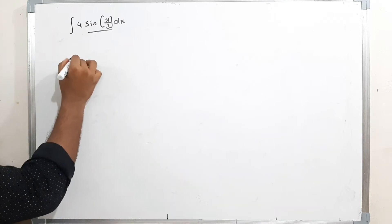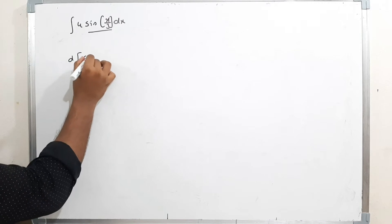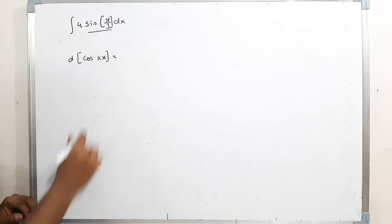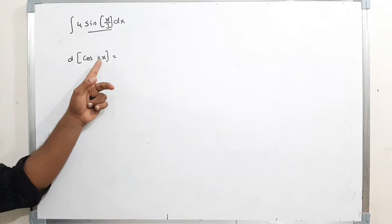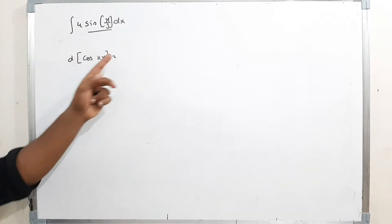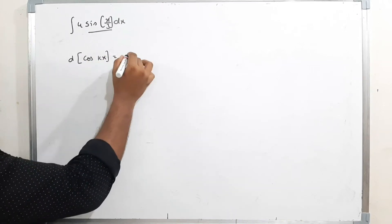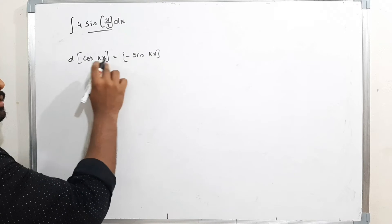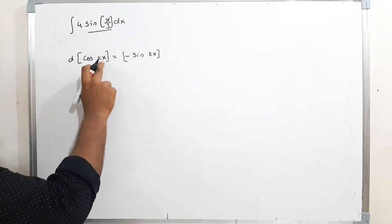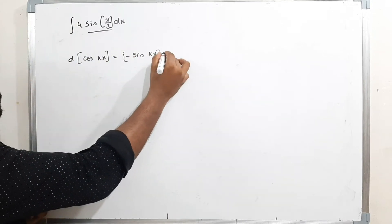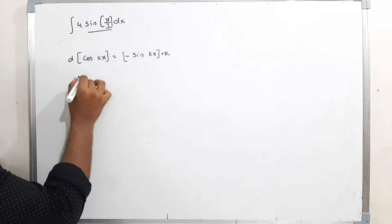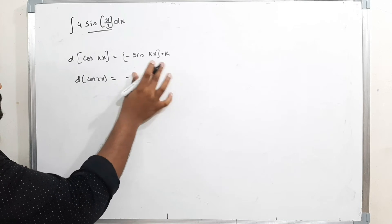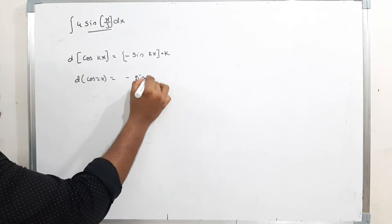To do this, recall that for differentiation you should know: the differentiation of cos(kx), where k is a constant. The differentiation of cos is -sin(kx), and by the chain rule there is one more factor of k. So the differentiation of cos(2x) is -sin(2x) times 2.